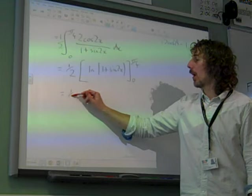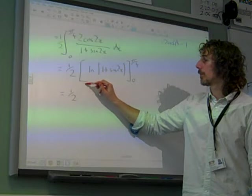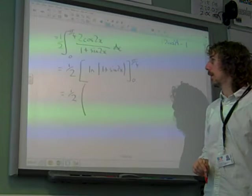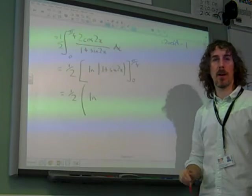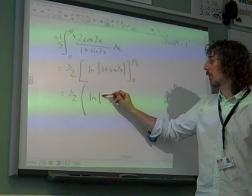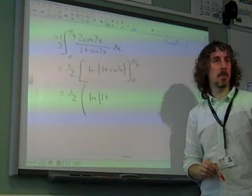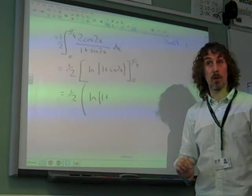So we've worked this out. We've got half of the natural log of 1 plus sin 2x. So that's the natural log of 1 plus sin pi by 2. Sin pi by 2 is 1.